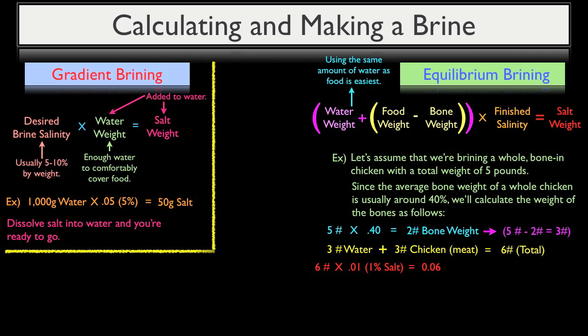So as we know, there are 16 ounces in a pound. So I can multiply 0.06 by 16 to find out that I'll need 0.96 ounces of salt dissolved in my 3 pounds of water. And to convert this into grams, I would multiply 0.96 times 28.3, which will give me 27.1 grams.